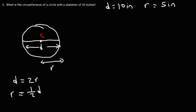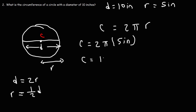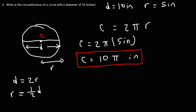Now, once we have the radius of the circle, we can calculate the circumference using the same formula as before. So it's going to be 2 times pi times 5 inches. 2 times 5 is 10, so the exact value for the circumference of the circle is 10 pi inches. But if you want a decimal value, C is approximately 10 times 3.14159, which rounds to 31.4 inches.